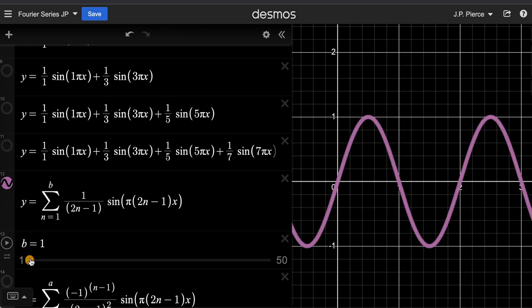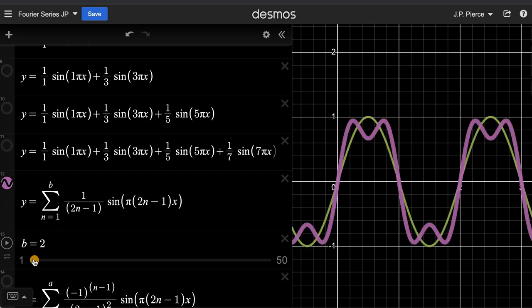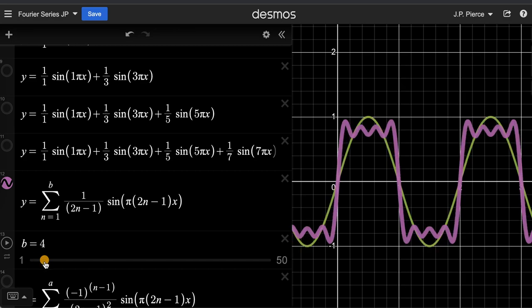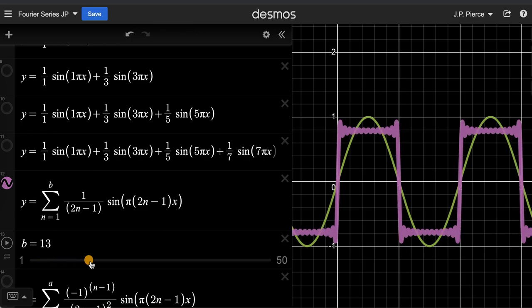And so you notice that here's that first sine wave. Here's the first two terms. And we can just kind of keep going, 4, 5, 6, 7. And we can keep going here all the way out to the first 50. And you'll see we get a really sharp square wave this time.